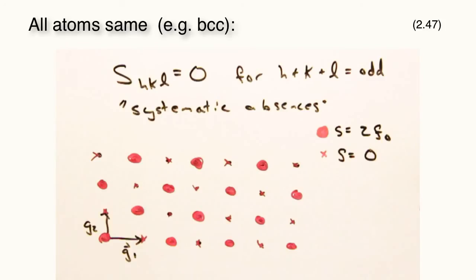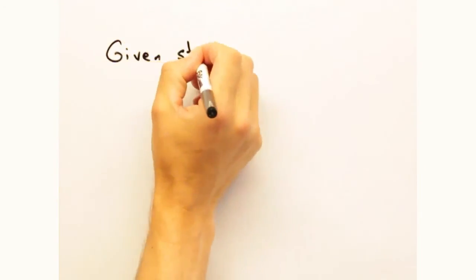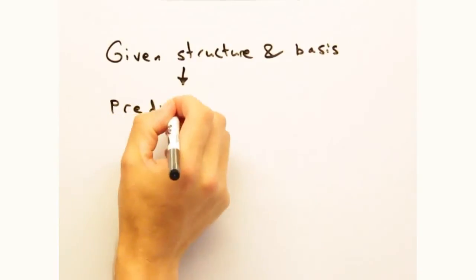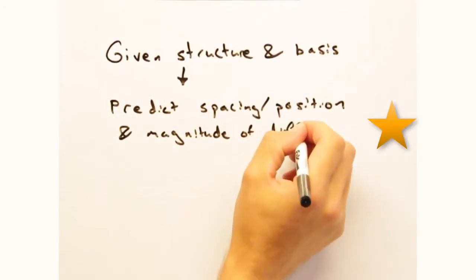So thus based on a given structure and basis, we can predict the spacing and the relative magnitude of the diffraction intensity. Sounds pretty awesome.